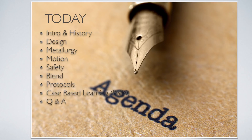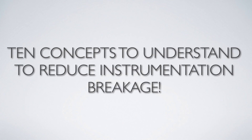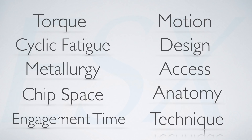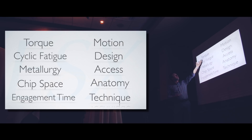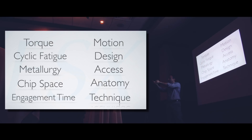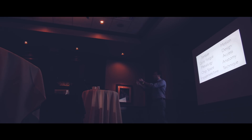We're going to talk about instrument safety, design, metallurgy, and 10 important concepts that everyone needs to understand to reduce their instrumentation breakage rate. Some of you may already know this, but we'll go through the most important ones. Obviously: torque and cyclic fatigue. Torque is the resistance to rotation — files without good torque resistance will unwind quickly; files with good torque resistance cut better, like a sharper knife.